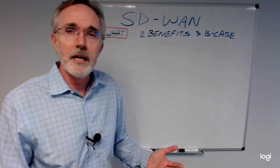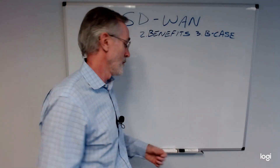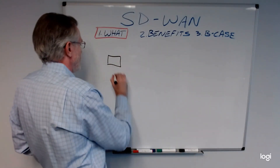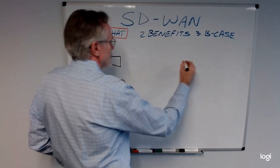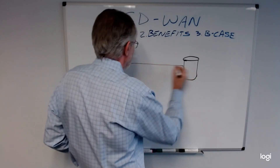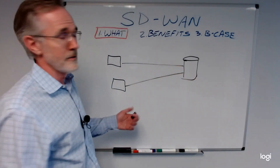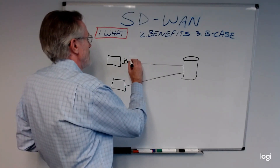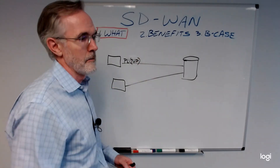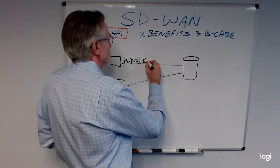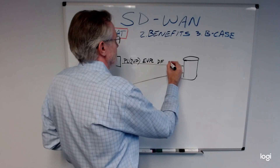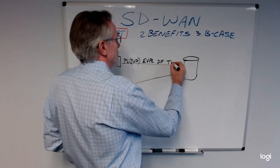To understand SD-WAN, you have to understand what we've been doing for wide area networking over the past several years. Wide area networking has been pretty traditional. We're going to put a couple of remotes and a data center that these remotes need to connect to. In the early days, this might have been a private line, otherwise known as a point-to-point — that could be EVPL, which is Ethernet Virtual Private Line Service, dark fiber, or in the old days, a traditional TDM circuit.